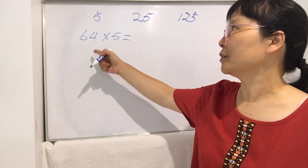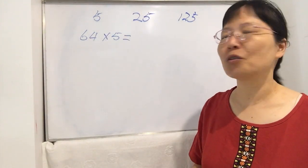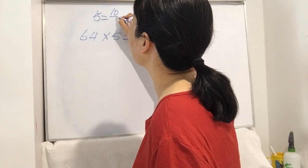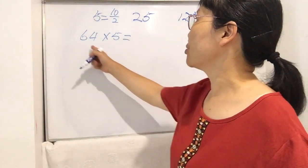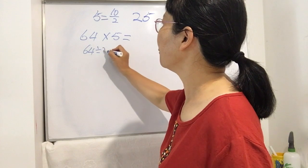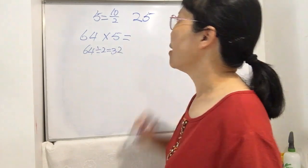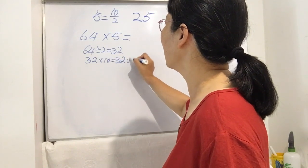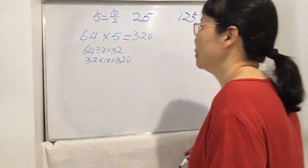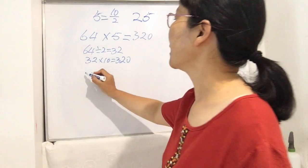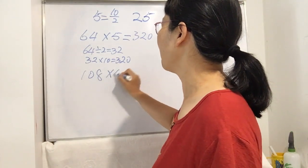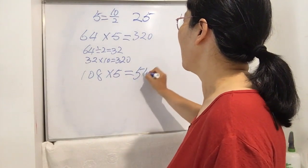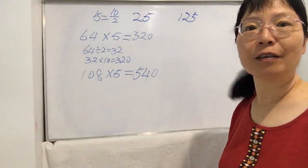Normally you use the traditional way, which also works, but today I'm going to show you a better way. Actually, 5 is 10 divided by 2. So use 64 divided by 2, which is 32, and then 32 times 10 is 320. That's the answer — just think about half, and then times 10. Let's do another one: 108 multiplied by 5. Half of 108 is 54, and 54 times 10 is 540.